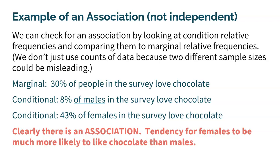The marginal is the total. So maybe a survey shows that 30% of all people love chocolate. But conditionally, if we only look amongst the males — notice I underlined 'males' here — only 8% of males in the survey love chocolate. So there must be a connection. Something about the gender of male made those people less likely to like chocolate.